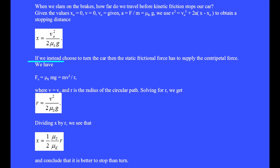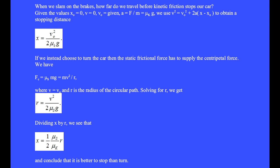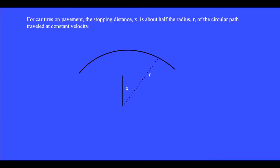If we instead choose to turn the car, the static frictional force has to supply the centripetal force: Fc equals μₛMg equals Mv² over R, where velocity equals V₀. Solving for R, we get V² over 2μₛg. Dividing x by R, we see that x equals one-half times the ratio μₛ over μₖ times R. The ratio is always a little bit greater than 1. We conclude it is better to stop than turn. For car tires on pavement, the stopping distance x is about half the radius R of the circular path traveled at constant velocity.